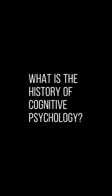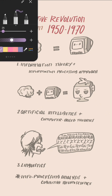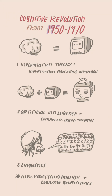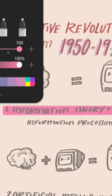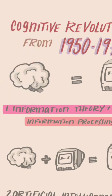The question today is: what is the history of cognitive psychology? Marking the end of behaviorism was a cognitive revolution, defined by three main influences. The first was information theory and the information processing approach.